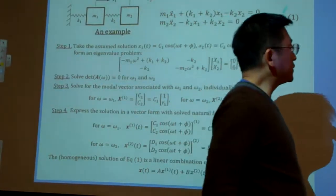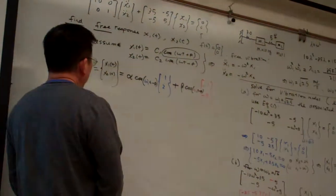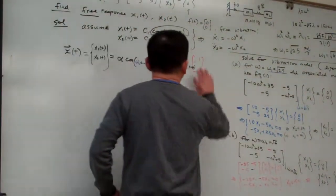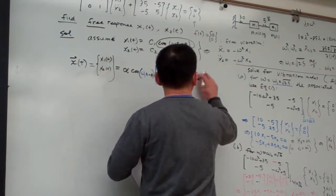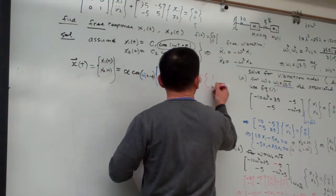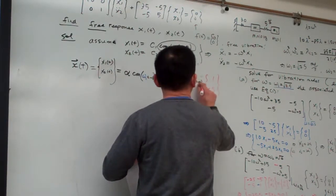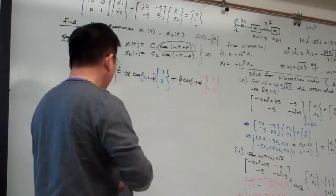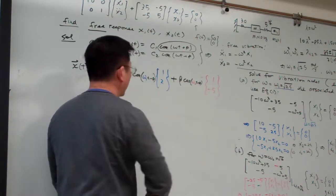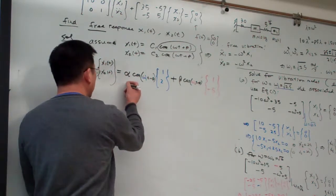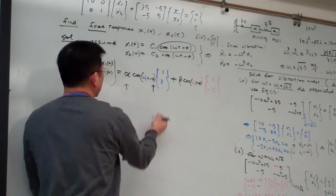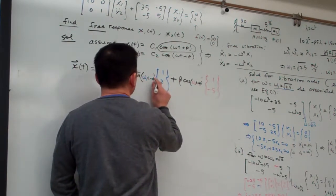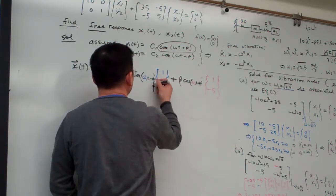So basically, from here, right now, once we have this one. Let me change here. So that is the general form. And from here you can see how many unknowns we need to solve. Alpha. Phi. And here I would say this is the phi one. Okay. For different modes. And here I would say this is the phi two.